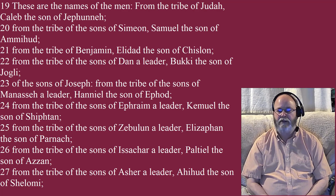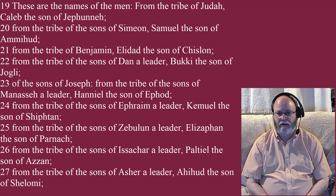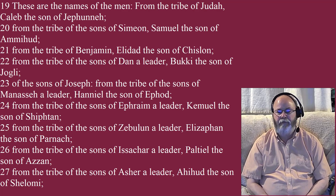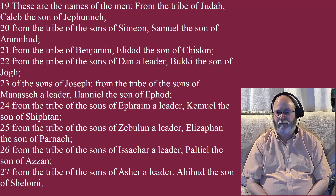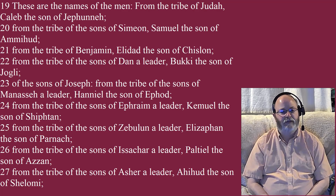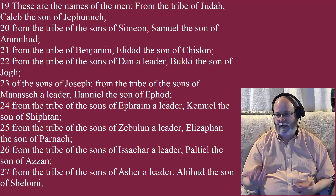From the tribe of the sons of Simeon, Samuel the son of Amahud. From the tribe of Benjamin, Eladad the son of Chislam. From the tribe of the sons of Dan, Eladad the son of Jogli. Of the sons of Joseph, from the tribe of the sons of Manasseh, a leader, Haniel the son of Ephod. From the tribe of the sons of Ephraim, a leader, Camuel the son of Shiptan — that's the way we would say it with the P-H anyway.